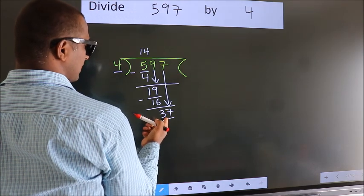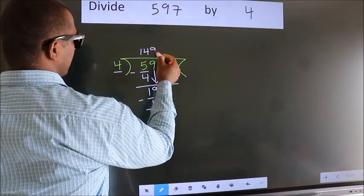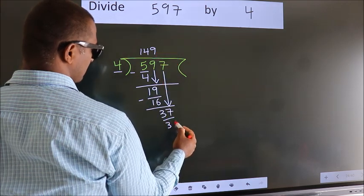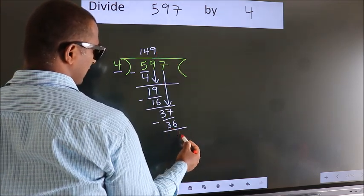A number close to 37 in the 4 table is 4 times 9, 36. Now we subtract. We get 1.